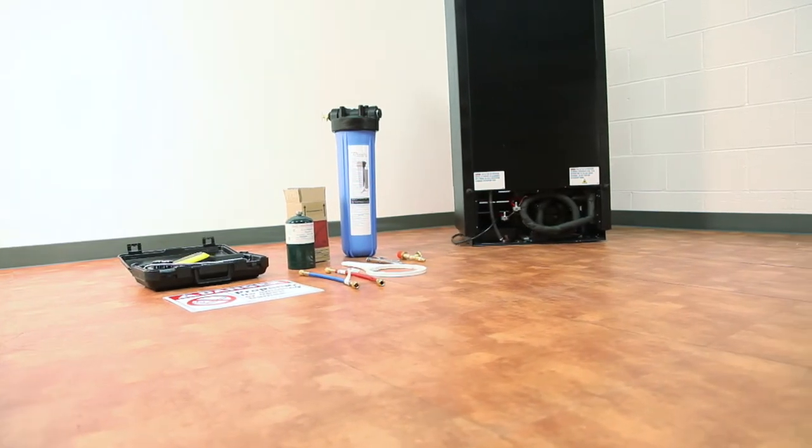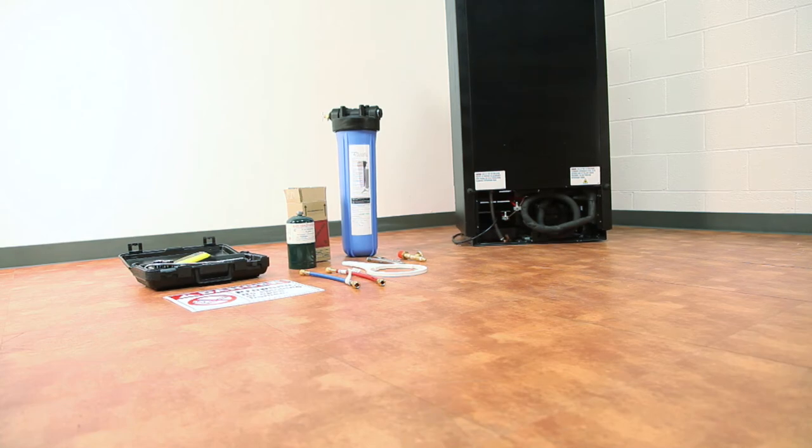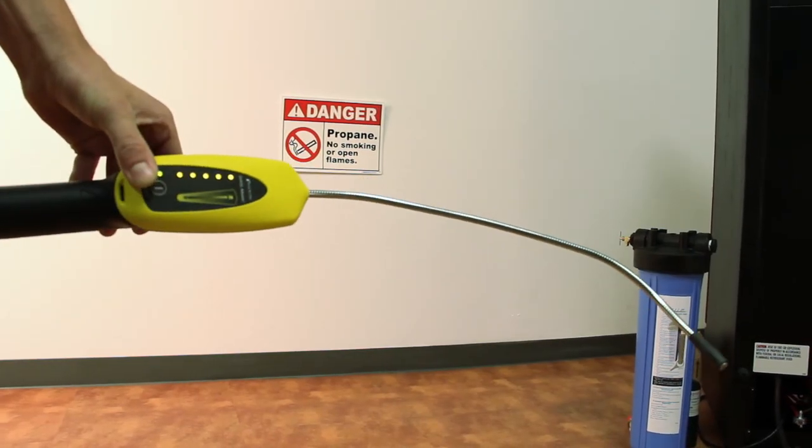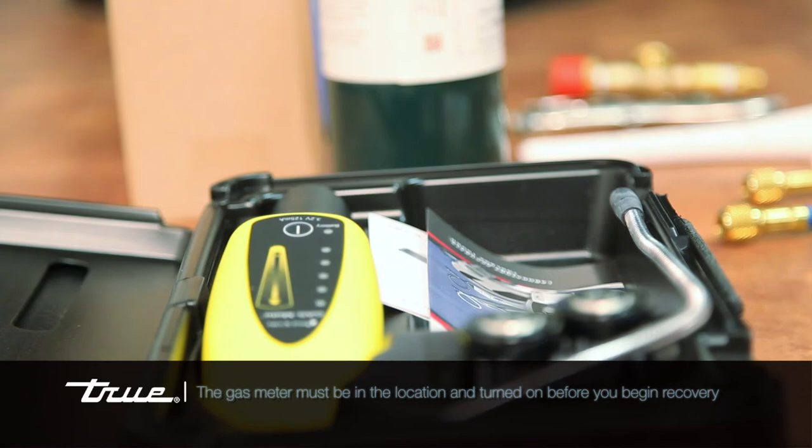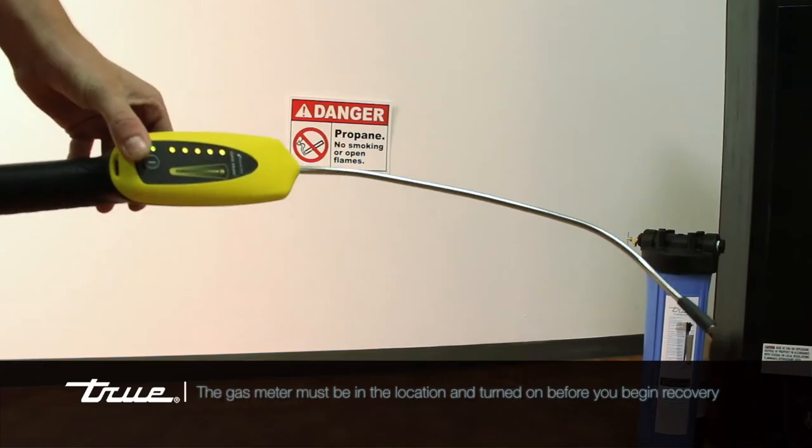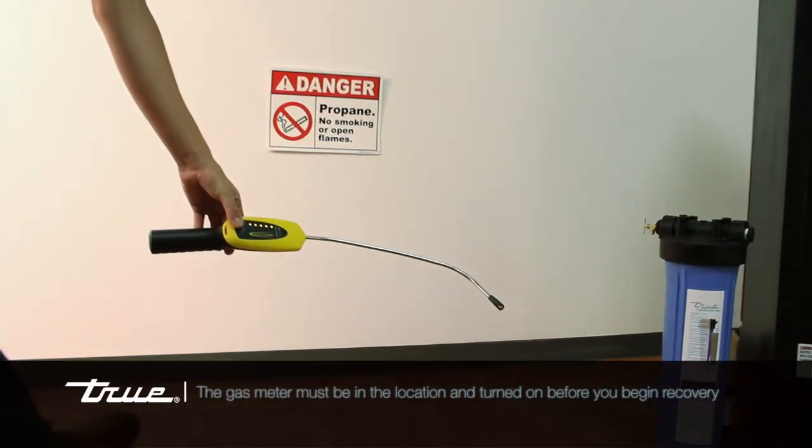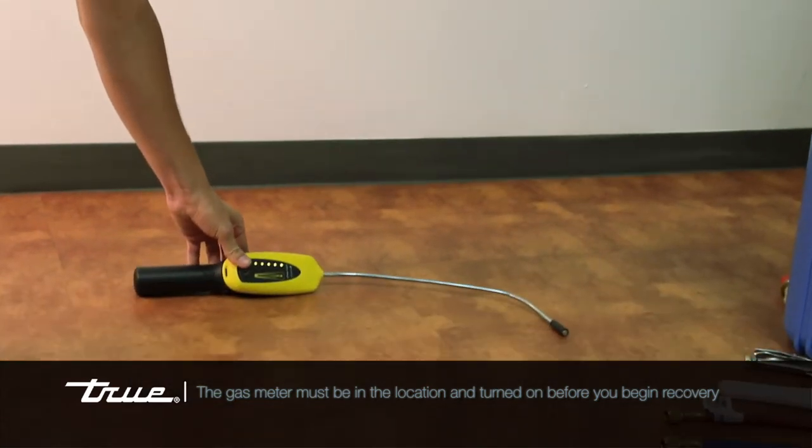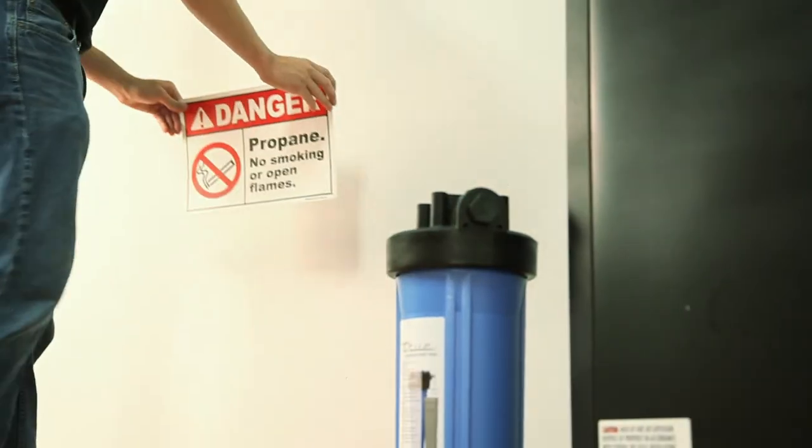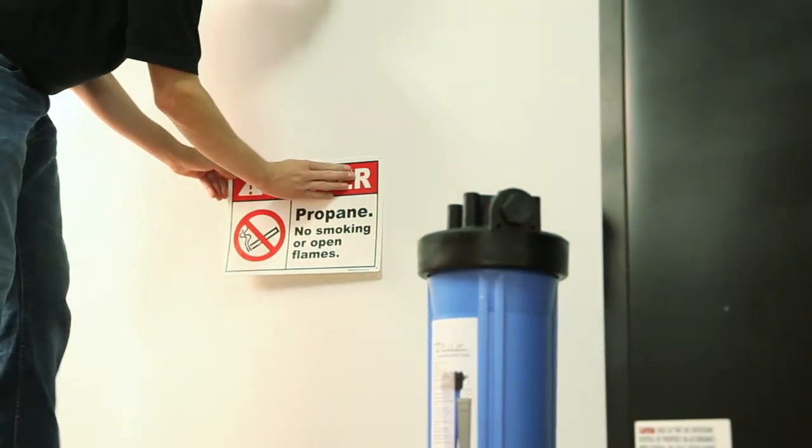The recovery process or any refrigeration related repair should start by turning on your gas meter or leak detector. This tool is also part of the HC Toolkit. This should remain on until the repair is completed. The safety placard needs to be in a location where the recovery or repair is taking place.